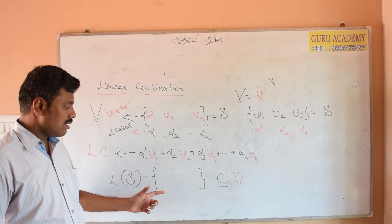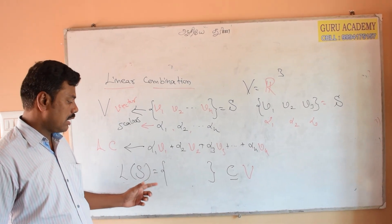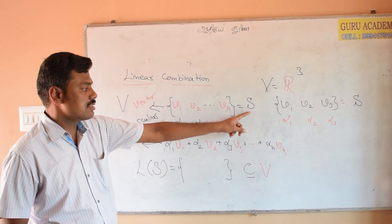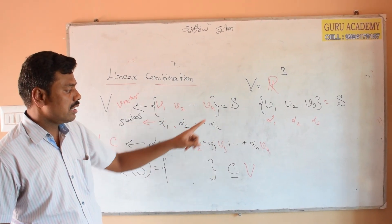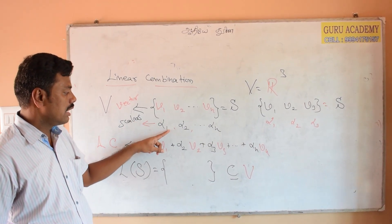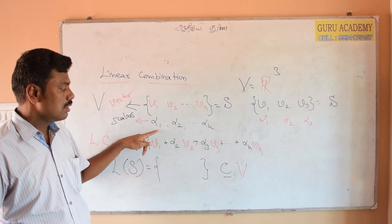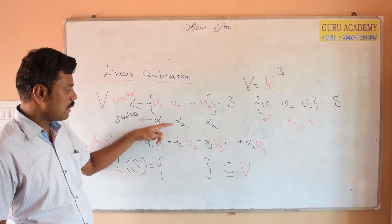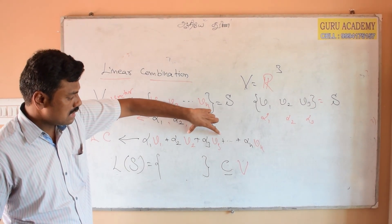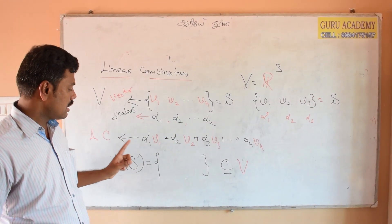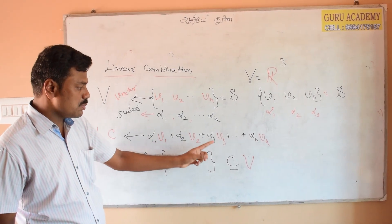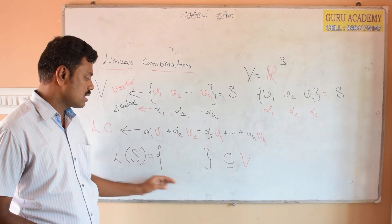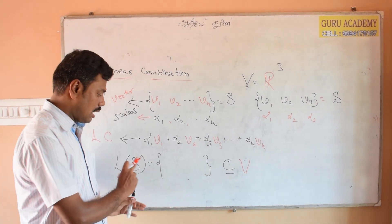This is linear span — the collection of all linear combinations of vectors in a set S. We have a set S with N elements and N corresponding scalars. We are forming the combination alpha 1 V1 plus alpha 2 V2, and so on, up to alpha N VN. By varying the alphas, we can get different combinations, and the collection of all such combinations is the linear span.